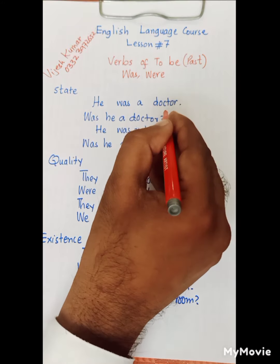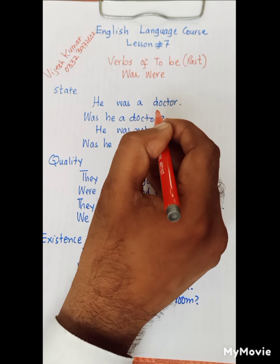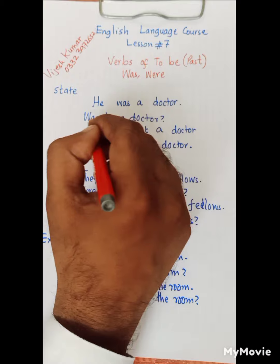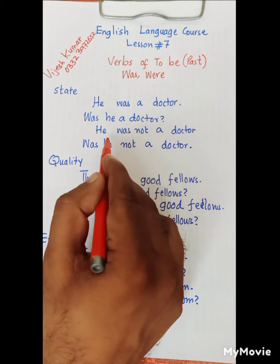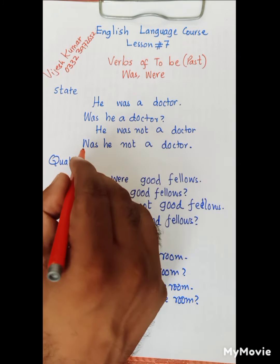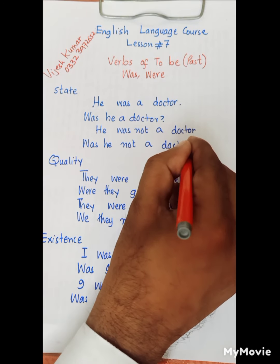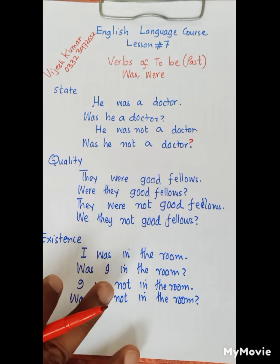For example, 'He was a doctor' — this is a state in past time. The interrogative form will be 'Was he a doctor?' The negative form will be 'He was not a doctor.' And the interrogative negative will be 'Was he not a doctor?'